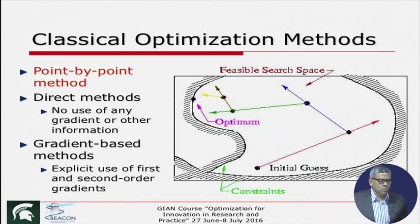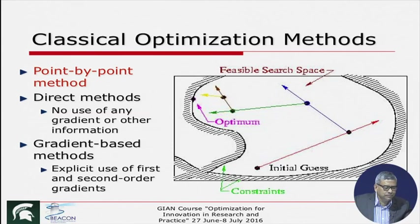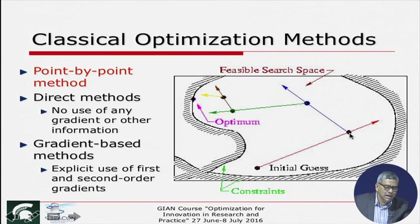Algorithms work in this way: you start with an initial guess, and once the constraint surfaces are identified — this is a two-variable kind of sketch — the algorithm has a way to determine which direction to search from that point. From a given point, it goes in a particular direction and finds the best point along that direction. That is the end of one iteration.